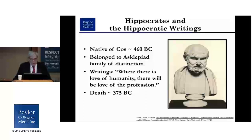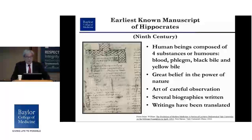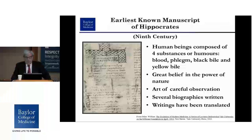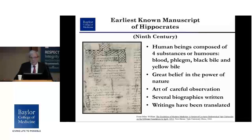The key person in Greek medicine was Hippocrates, a native of Kos born around 460 BC and dying in 375 BC. He belonged to the Aesculapiad family of distinction and had many writings. One of his famous sayings was: 'Where there is love of humanity, there will be love of the profession.' The earliest known manuscript of Hippocrates goes back to the 9th century, in which he describes human beings composed of four humors: blood, phlegm, black bile, and yellow bile. He had great belief in the power of nature and believed in the art of careful observation. There is ongoing debate about whether all the writings can be attributed to one individual or to a school of individuals he trained.